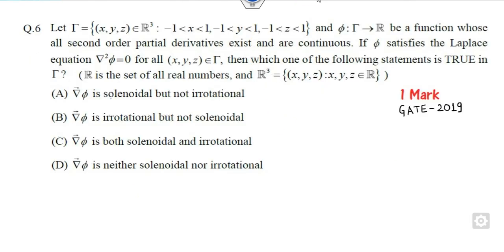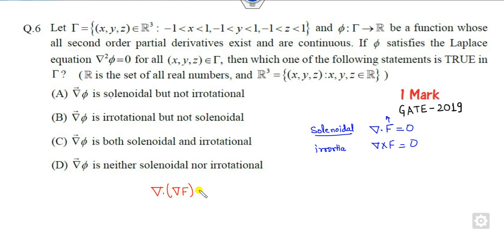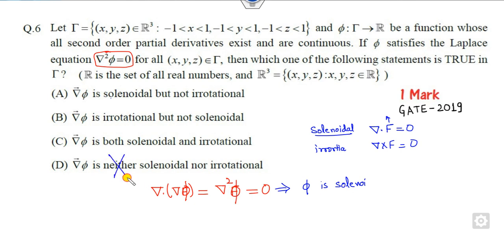Look at the last question, which is related to solenoidal and irrotational fields. If divergence of F = 0, then F is said to be solenoidal. Irrotational means curl of F = 0. Here, we check divergence: this is nothing but ∇²φ, which is already given as 0, so φ is solenoidal — cancelling options A and C.